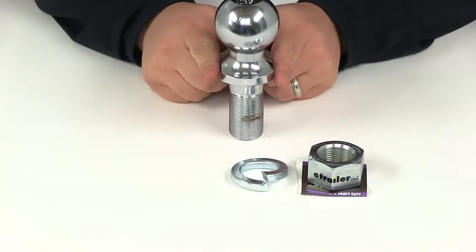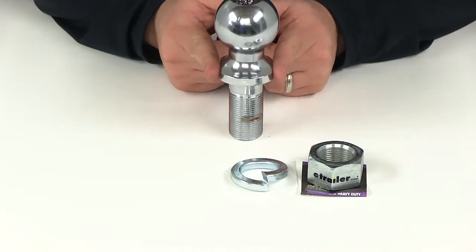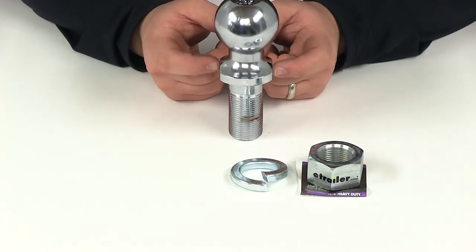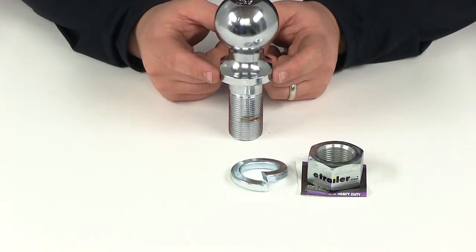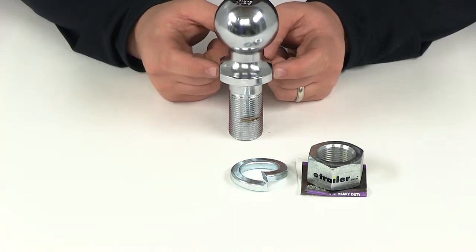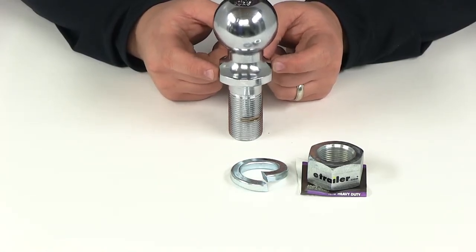Now here on the sides of the platform it's going to have the flats. These are just your wrench flats. Makes for an easier installation. You can get your wrench around there for a nice adequate grip. Really going to come in handy when you need to torque this down.